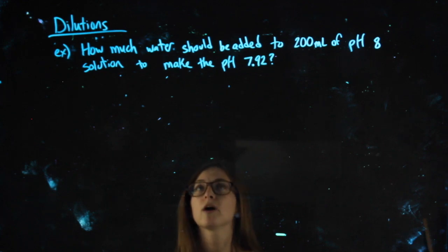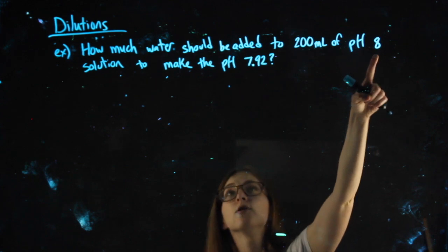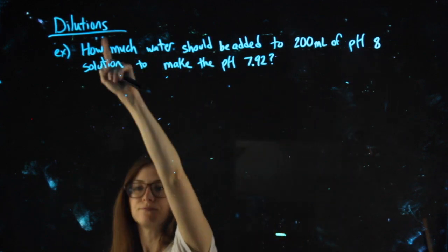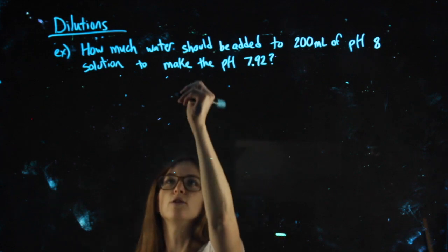In this example problem, we are adding water to a base in order to decrease its pH. Since I'm adding water, I know it's a dilution. All I'm doing is taking a base, adding some water. It must be a dilution.